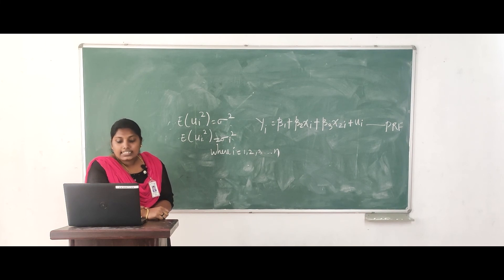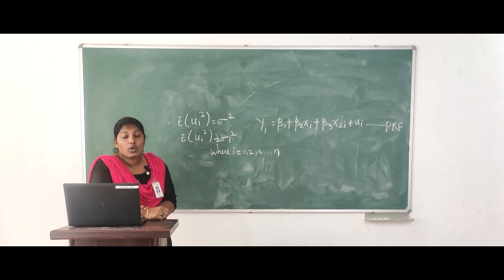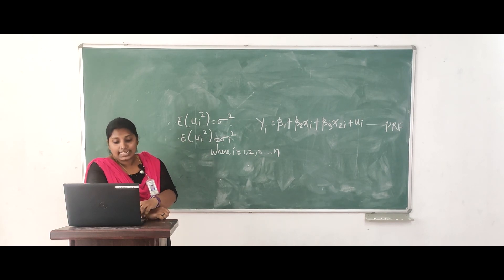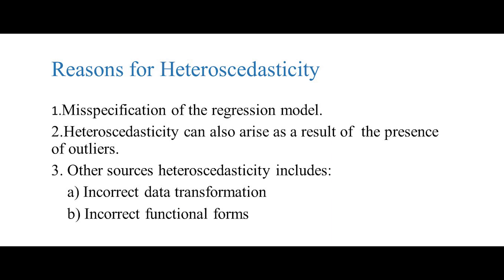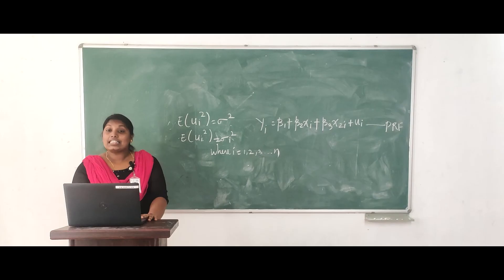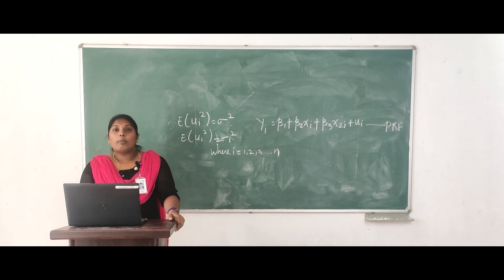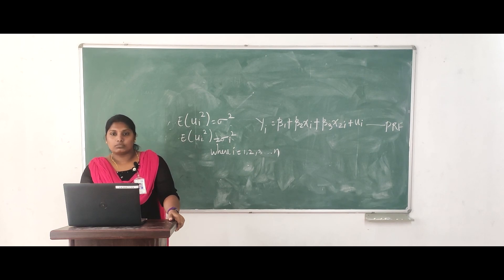Let us look at the different sources of heteroscedasticity. The first important cause is the presence of outliers — an outlier is an observation that is much different in relation to other observations in the sample. Other sources include misspecification of the regression model, incorrect data transformation (such as ratio or first-difference transformation), and incorrect functional forms (for example, linear versus log-linear). I hope you are all clear about this topic. If you have any doubt, please comment below. Thank you.